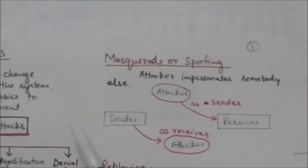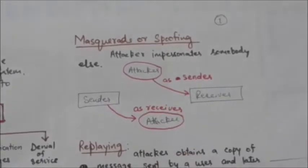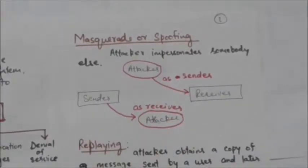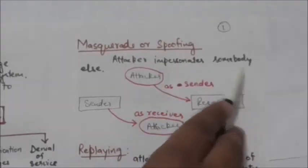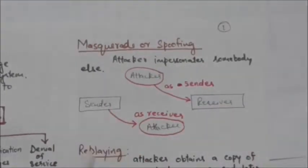First, we will study about masquerade. Masquerade is also known as spoofing. In this case, masquerade or spoofing happens when an attacker impersonates somebody else. For example, an attacker might steal the bank card or PIN of a bank customer and pretend that he is the customer.